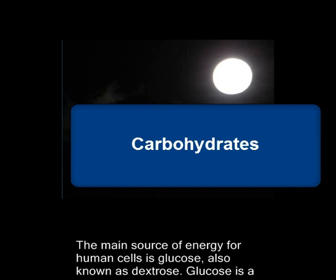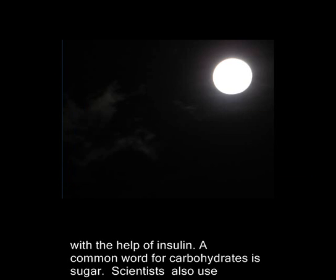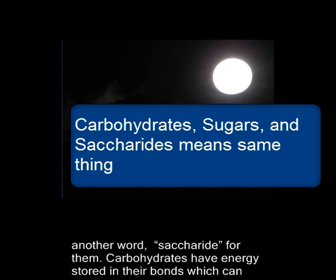The main source of energy for human cells is glucose, also known as dextrose. Glucose is a carbohydrate. A certain quantity of glucose is maintained in human blood with the help of insulin. A common word for carbohydrates is sugar. Scientists also use another word — saccharide — for carbohydrates.